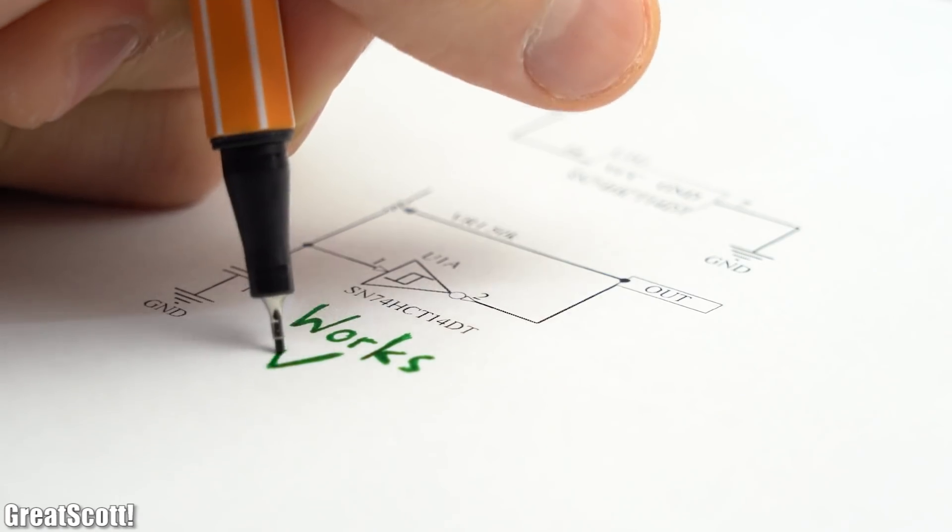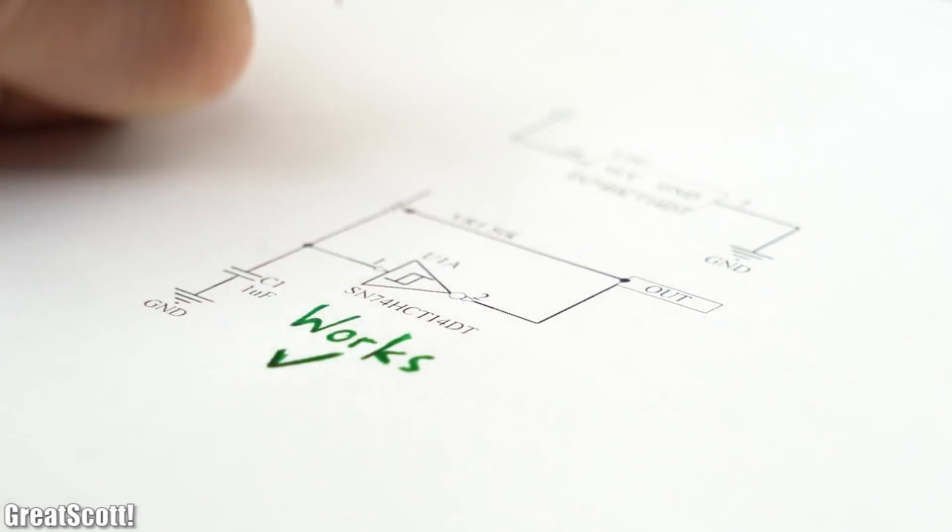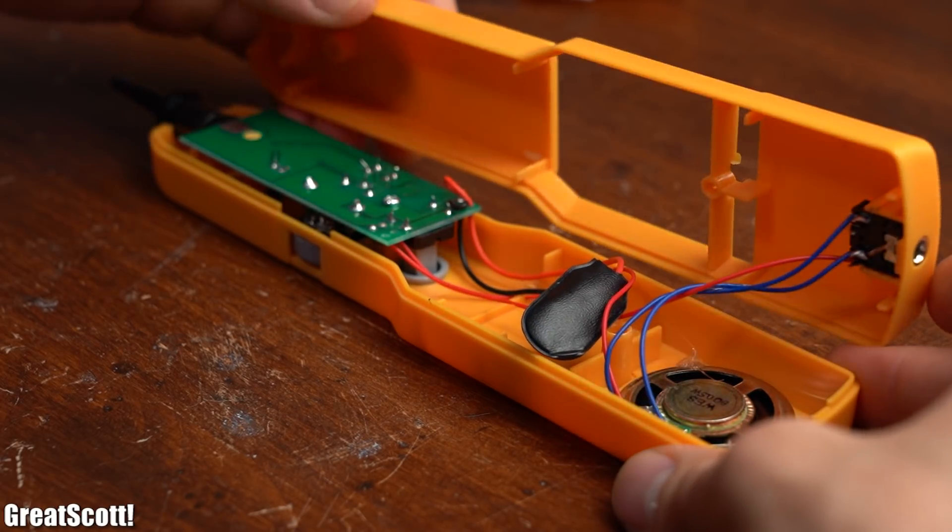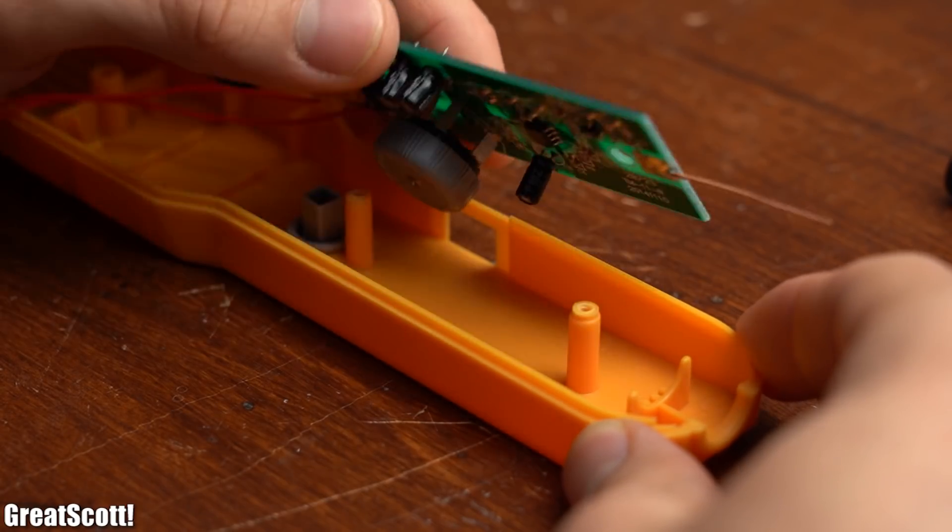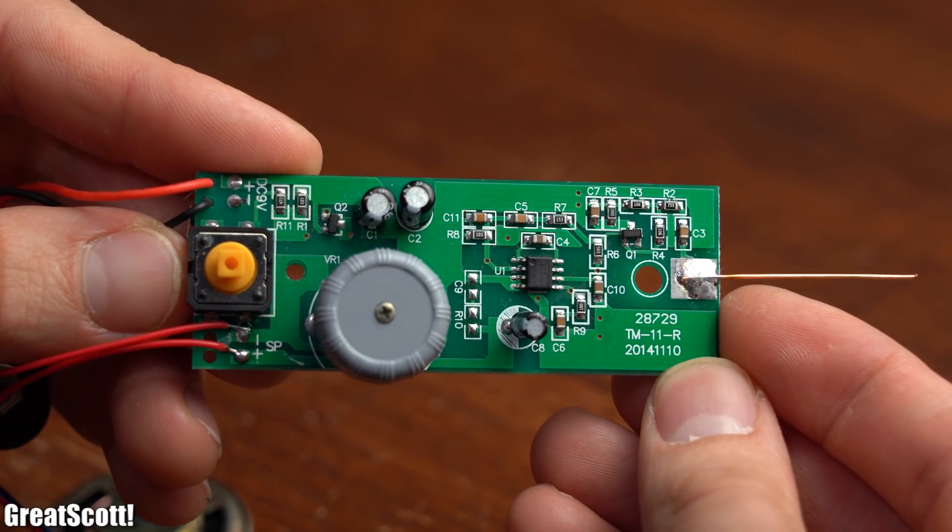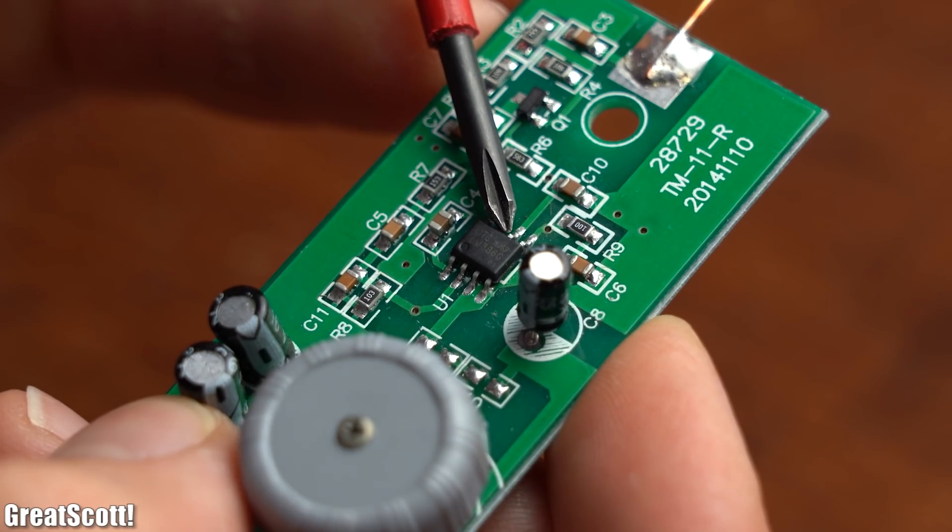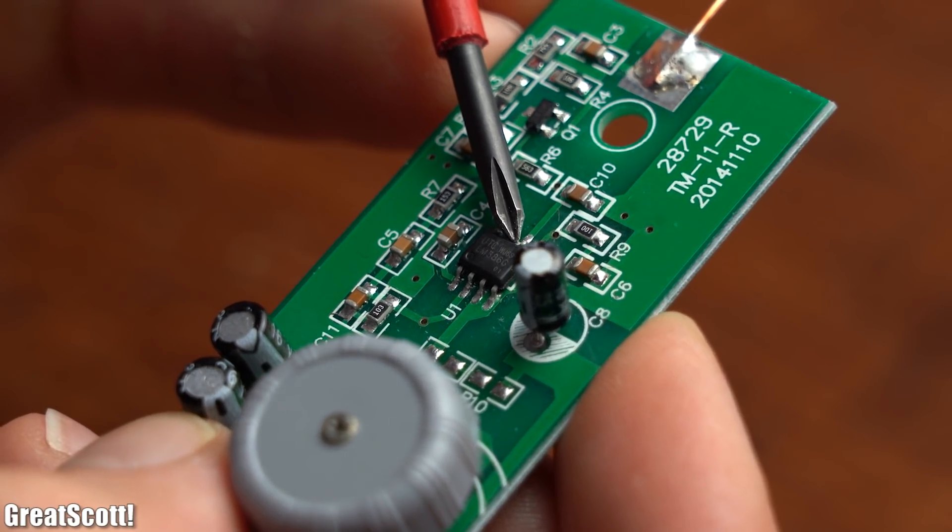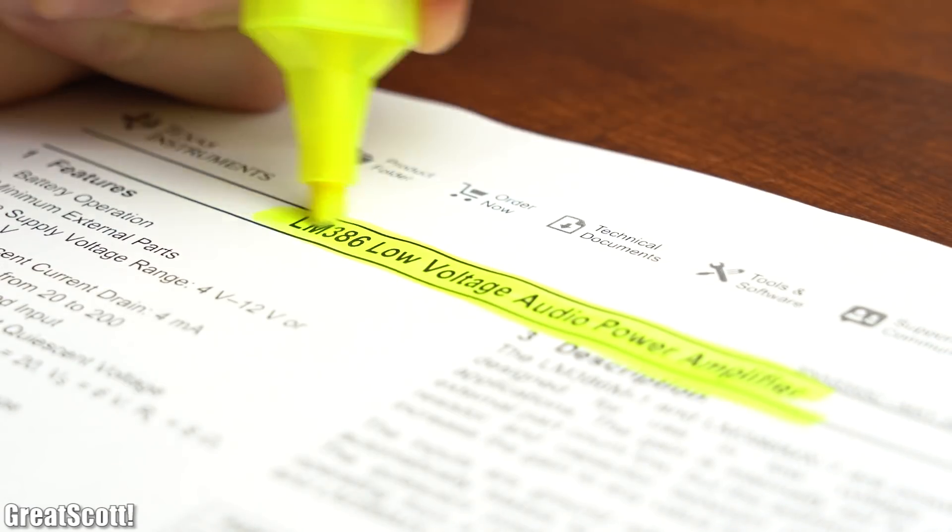That means that the DIY sender is done and works, and thus it was time to open up the receiver and have a closer look at it as well. Once again, these circuit traces were clearly visible and it seems like the only IC used is an LM386 audio power amplifier.